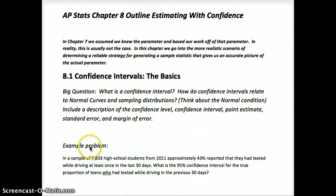Here's an example problem that I'll have you sum up in the free response at the end once we've gone over the basics. We had a sample of 7,833 high school students from 2011, and approximately 43% reported that they had texted while driving at least once in the last 30 days. We want to know the 95% confidence interval for the true proportion of teens who had texted while driving in the previous 30 days.